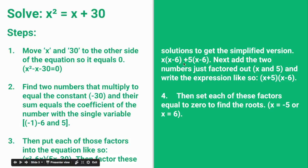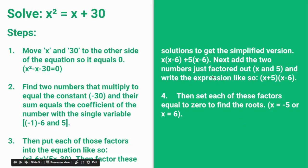Now you combine the outside terms to get x plus 5 times x minus 6. Then you move 6 and 5 over to the other side to find what x equals. So x equals 6 and x equals 5. These are your two roots.